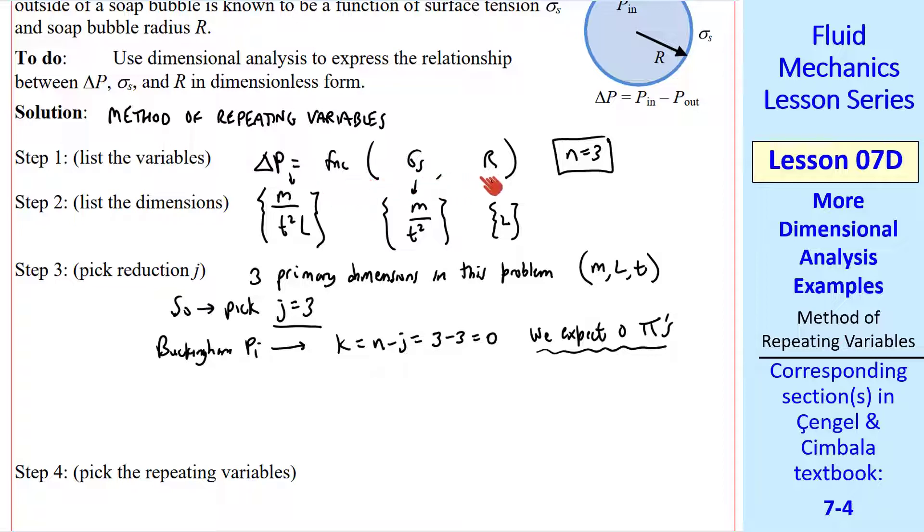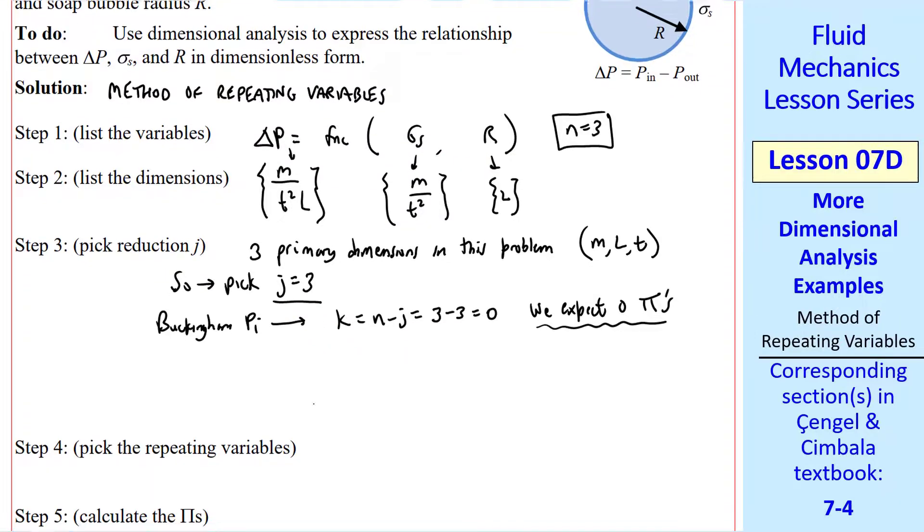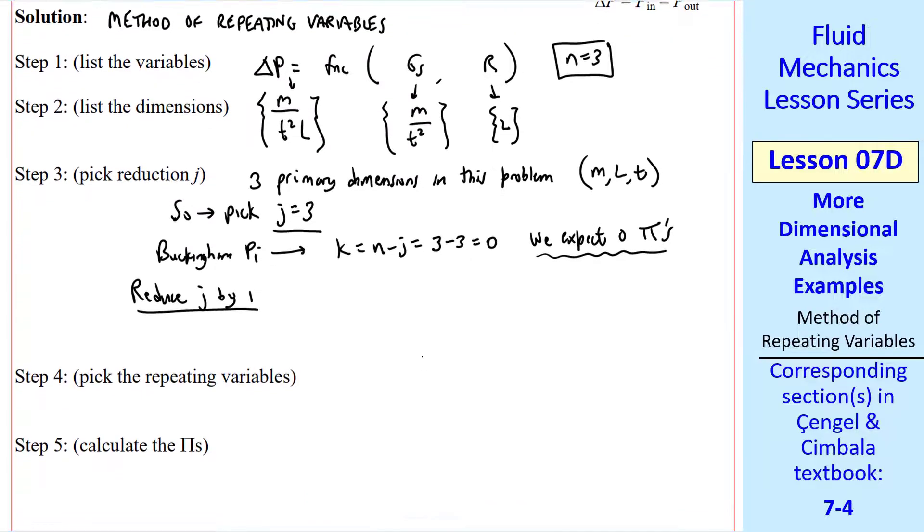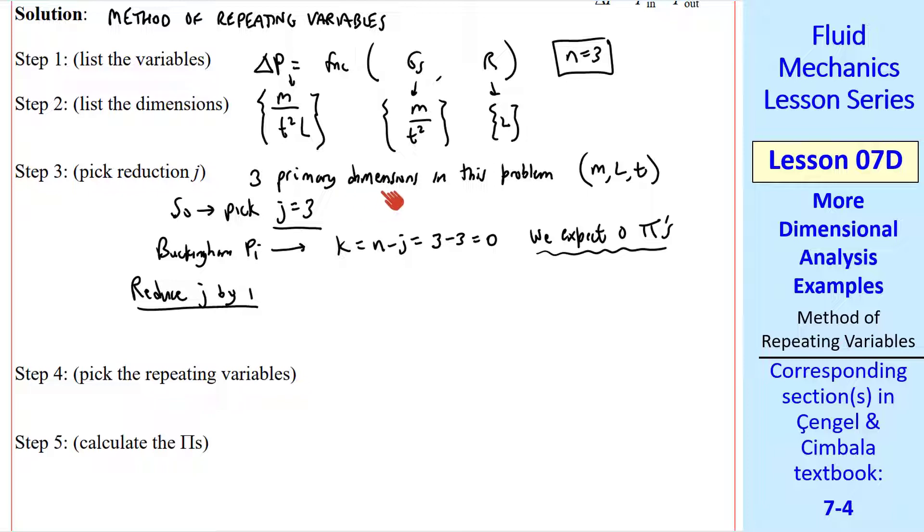Well, either we have not listed enough variables, and delta p depends on something in addition to these two, or this j is too big. We'll assume the latter and reduce j by 1. This is an example of what I mentioned last time, that picking j as the number of primary dimensions in the problem doesn't always work. So we'll set j equal 2, and k becomes 3 minus 2, or 1. We expect only 1 pi.